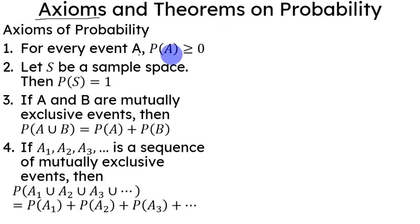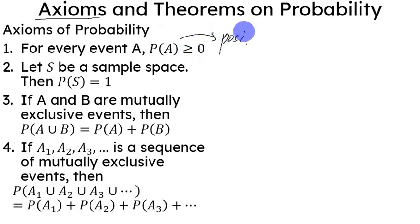The first axiom is that for every event A, the probability of that event A will be greater than or equal to zero — or in other words, it will always be positive. This should be true by definition because we want all probabilities to be greater than or equal to zero, which means zero is the lowest value, meaning it is impossible for that event to happen.